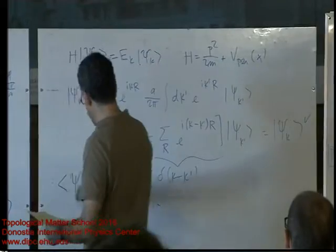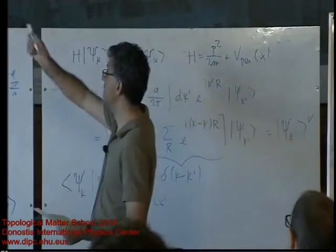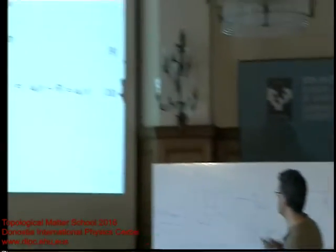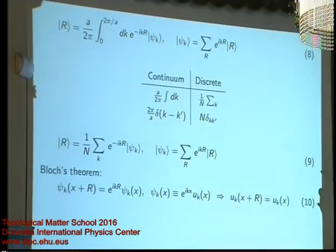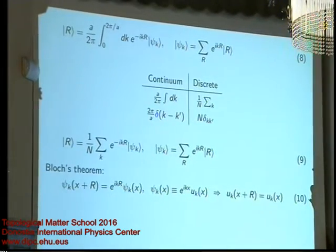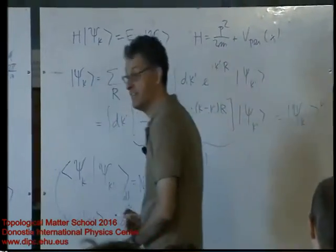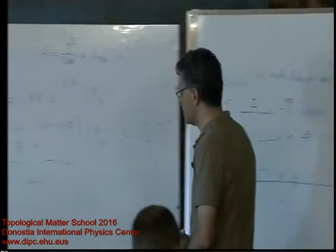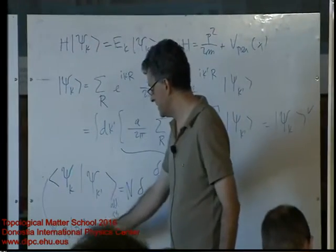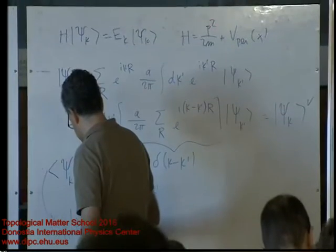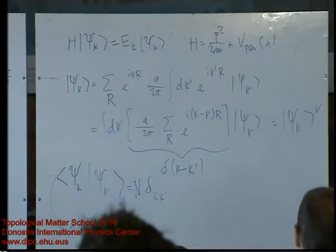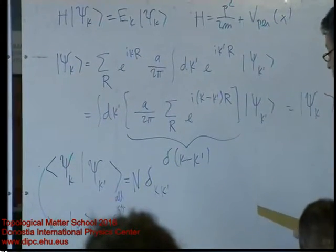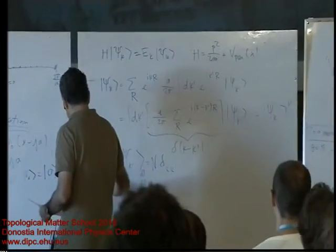I'll leave as an exercise that from the orthonormality of Bloch functions and the Wannier-Bloch transformation, you can show that Wannier functions are also an orthonormal set. Whereas the Bloch functions are normalized over a unit cell, the Wannier functions are normalized over all space — there is no N factor. The second property is that the Wannier functions are periodic images of one another, using the same terminology as for the finite chain.